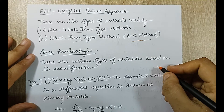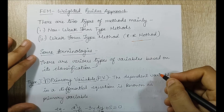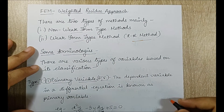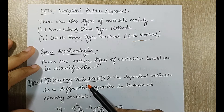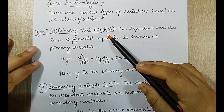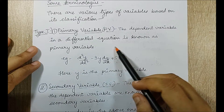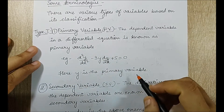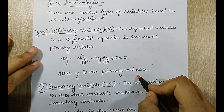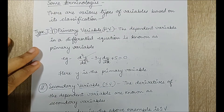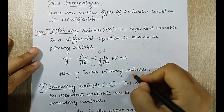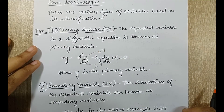We will see some terminologies. There are various types of variables based on their classification. The first type is called primary variable (PV) and secondary variable (SV). The dependent variable in the differential equation is known as the primary variable. In the example shown, y is the primary variable because y is the dependent variable and x is the independent variable.